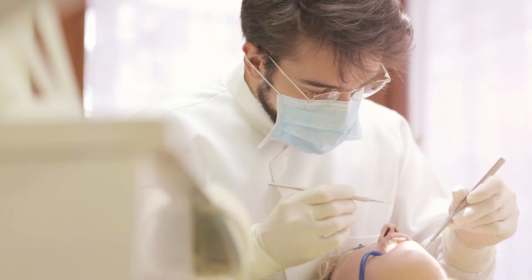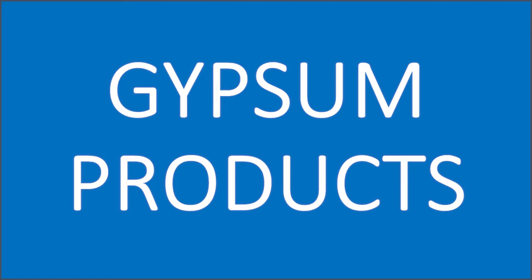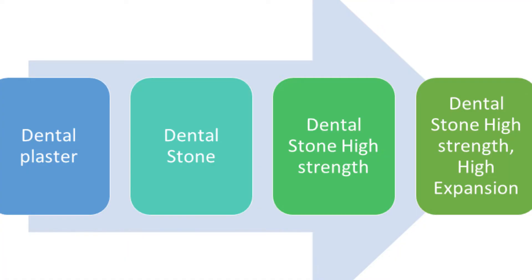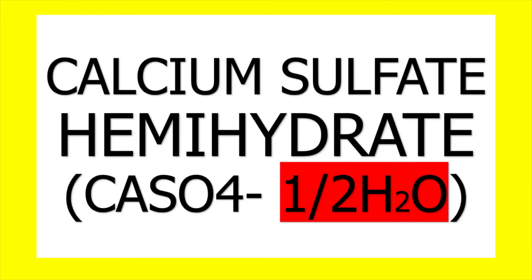In dentistry, the modified form of calcium sulfate hemihydrate is used and we call it a gypsum product. There are different types: dental plaster, dental stone, dental stone high strength, and dental stone high strength high expansion. But all of these are made up of the same mineral composition — calcium sulfate hemihydrate.